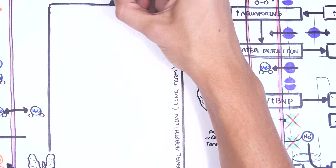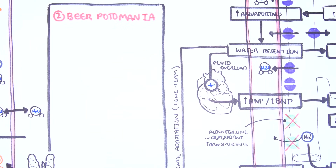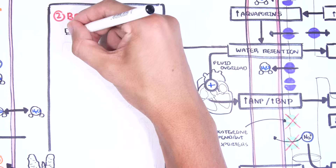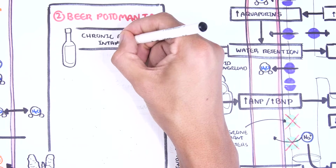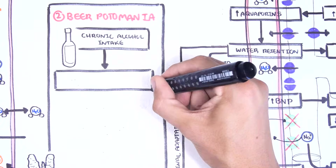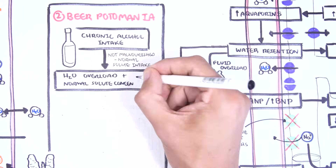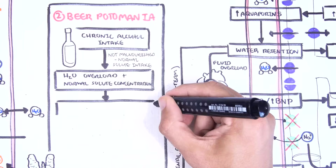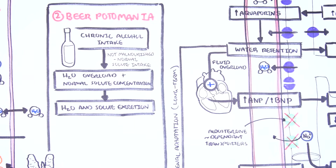Another rarer cause of euvolemic hyponatremia is beer potomania — though this is an oversimplification and the exact pathophysiology is questionable. Chronic alcohol drinkers who are not malnourished consume large volumes of alcohol, causing hypervolemia. However, they have normal solute concentration because they are not malnourished, so they can excrete water and solutes together and are able to balance sodium and water levels.